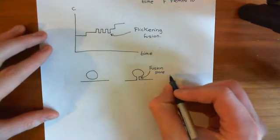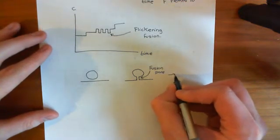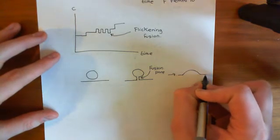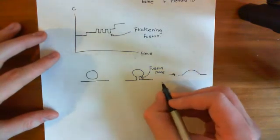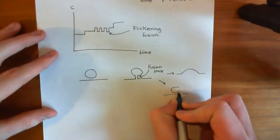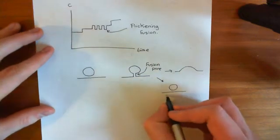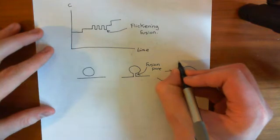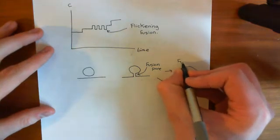And what is believed to happen is that either this fusion pore can go on and fully fuse the vesicle with the plasma membrane, or what can happen is you can return to the closed state, so the fusion pore can just close again. So it can go either from having this fusion pore to being in the closed state, or it can go on to full fusion.